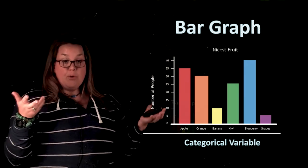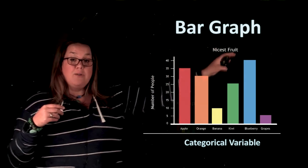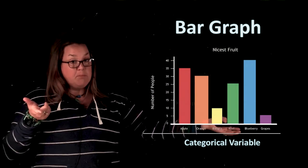So here we have the frequency and you can see that the height of the bars is going to correspond to how many individuals are in each group. So a taller bar, more people. Shorter bar, less people.